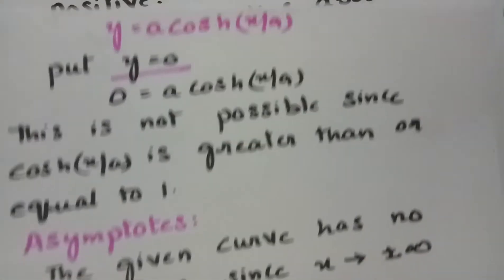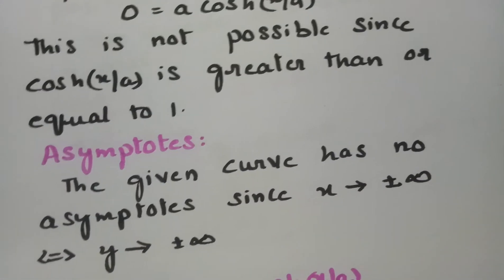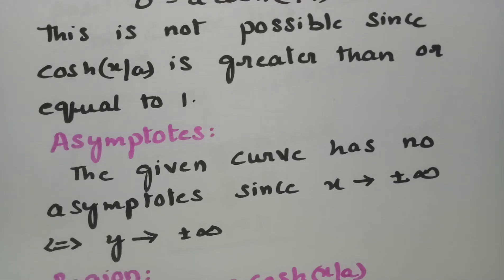Coming to the asymptotes: the given curve has no asymptotes, since as x tends to plus or minus infinity, y also tends to plus or minus infinity. Therefore the curve doesn't have asymptotes.